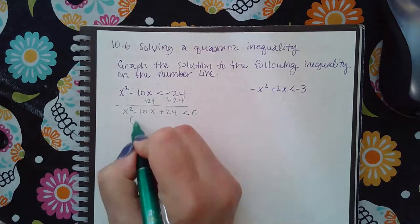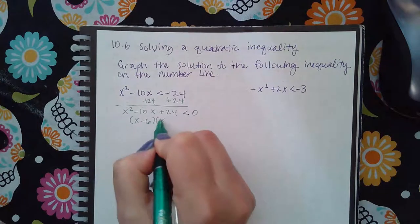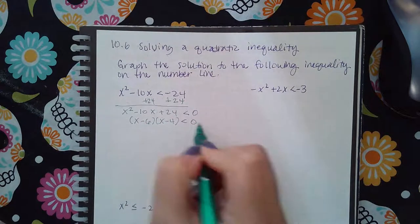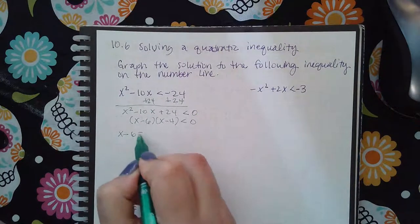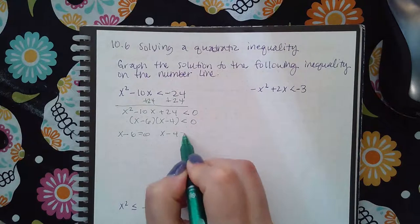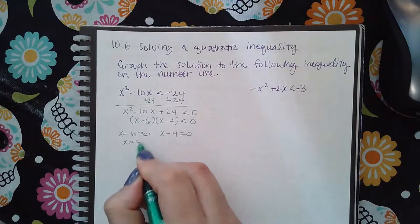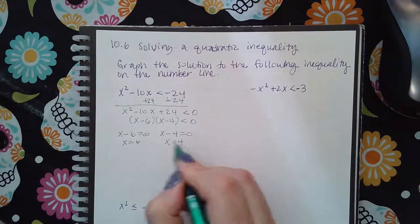Then you can factor it, and then to find those important numbers you set each factor equal to zero.